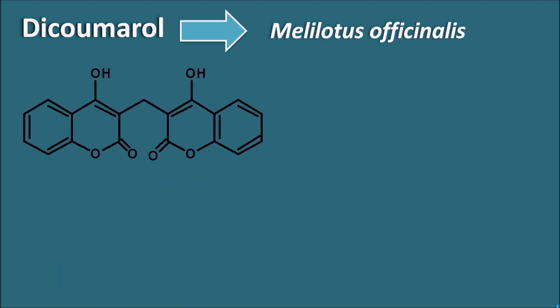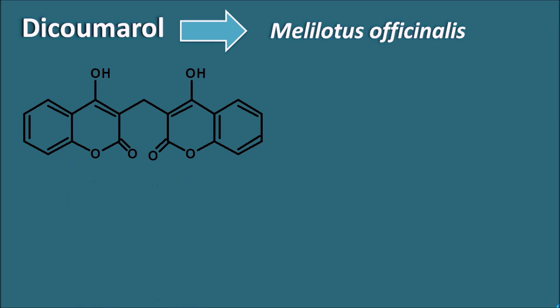Next is dicoumarol. Dicoumarol comes from Melilotus officinalis, the sweet clover. When this sweet clover is spoiled, it produces dicoumarol. Dicoumarol has this structure, and we can observe it contains a hydroxycoumarin ring present twice, so it is a bishydroxycoumarin.